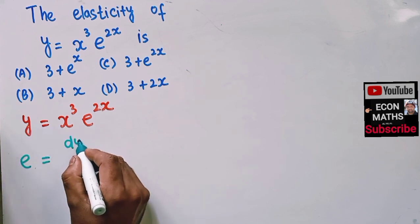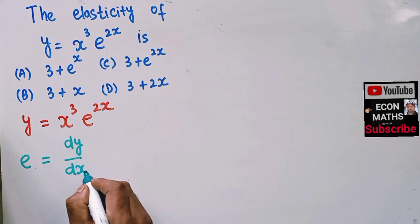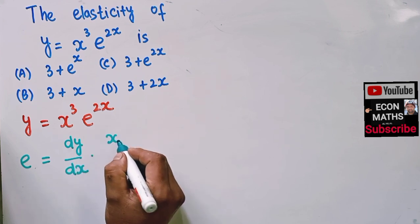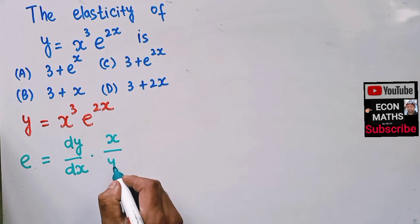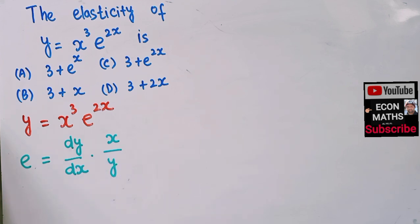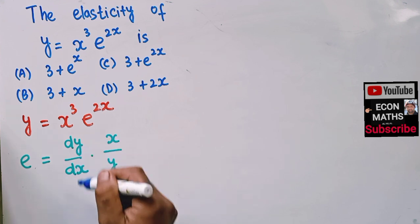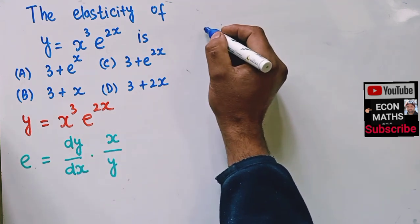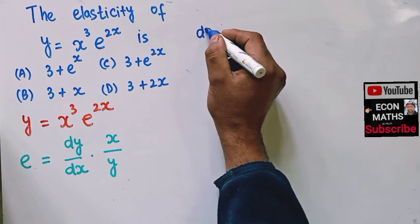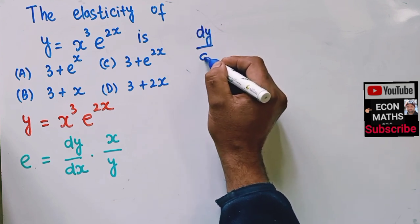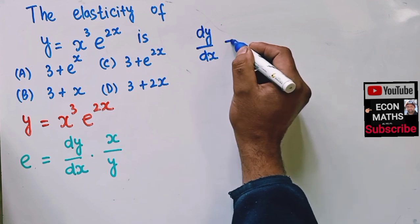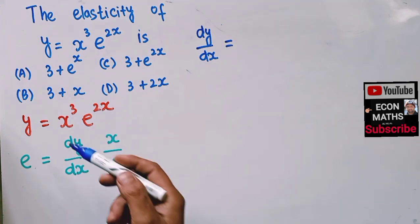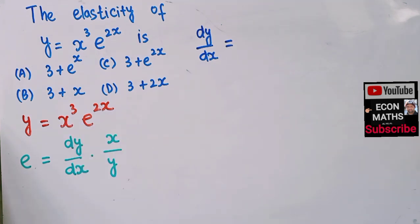So first we need to find dy/dx, the derivative. We have dy/dx and here we have a product of two functions, so we use the product rule.